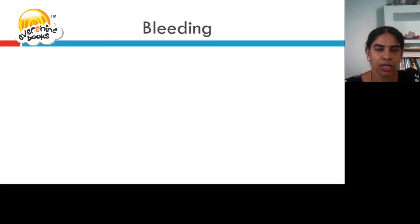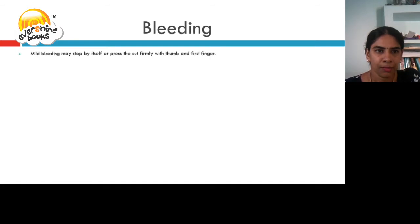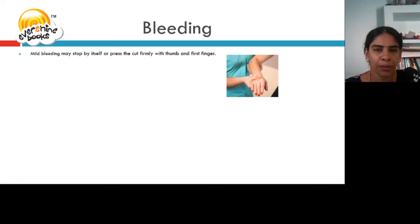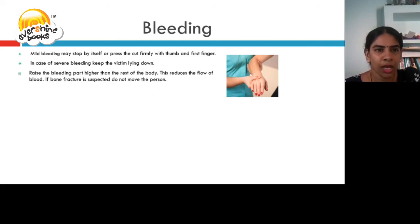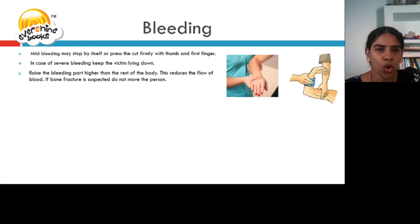Let us now discuss about bleeding and the first aid to be given for bleeding. Mild bleeding may stop by itself, or press the cut firmly with thumb and first finger. In case of severe bleeding, keep the victim lying down. Raise the bleeding part higher than the rest of the body. This reduces the flow of blood.